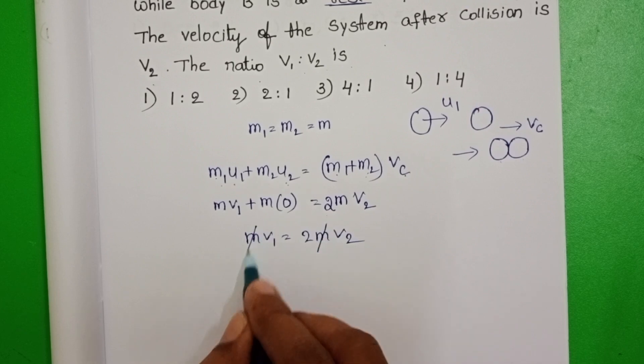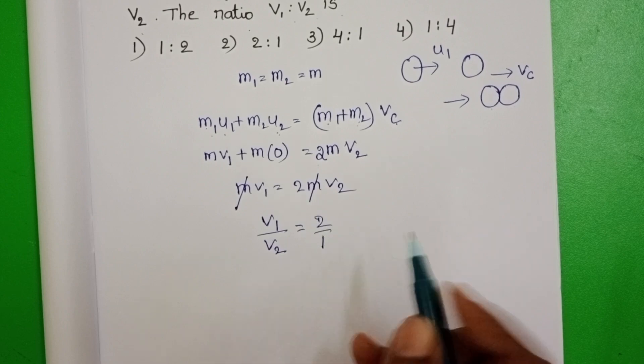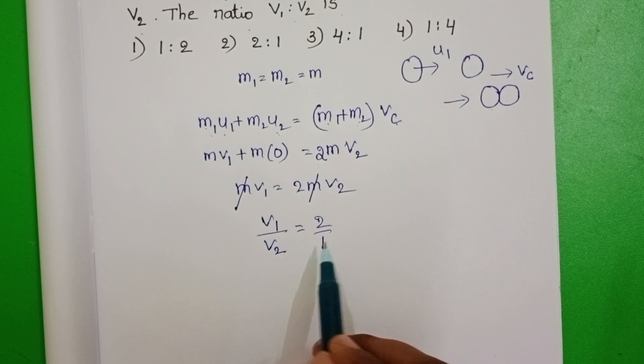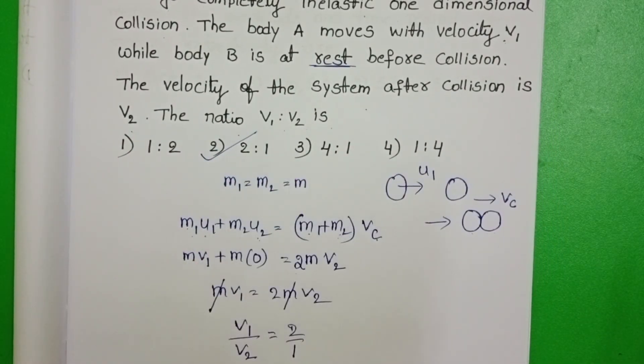On both sides, mass gets cancelled. V1 by V2 equals 2 by 1. The ratio of the velocities V1 to V2 equals 2 to 1. Second option is correct. Thank you.